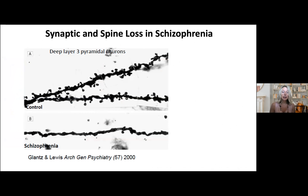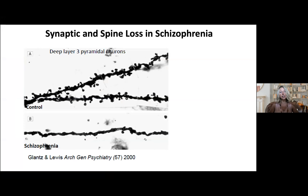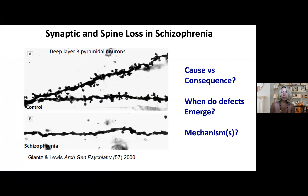There has been data from human studies supporting this pruning hypothesis of schizophrenia. Work by Bhanu and David Lewis's labs from post-mortem analysis showed that individuals with schizophrenia have a sparsity or decrease in spines in the prefrontal and other brain regions compared to controls. However, the problem with these studies, including MRI studies showing cortical thinning, is really whether it's cause or consequence — when do these defects emerge, and what are the mechanisms?